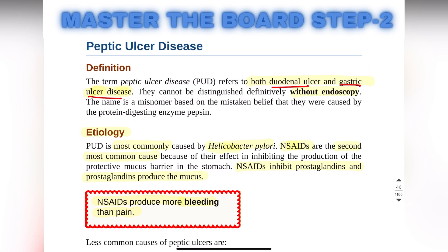Hello and welcome to Let's Medicine. Today the topic of discussion is peptic ulcer disease. Peptic ulcer disease refers to both the duodenal ulcer and the gastric ulcer disease, and they cannot be distinguished from each other without endoscopy.